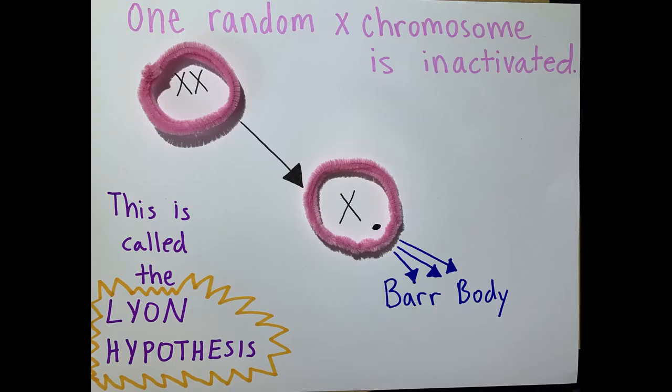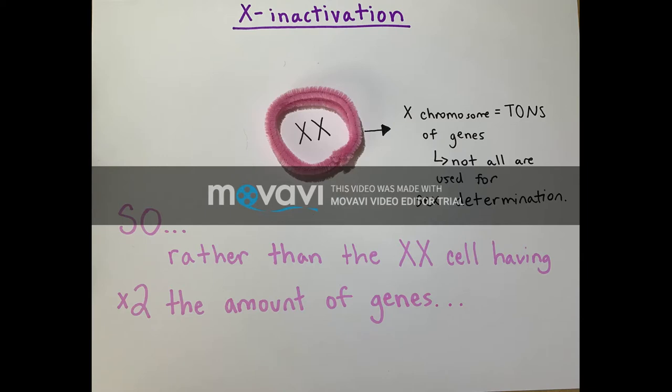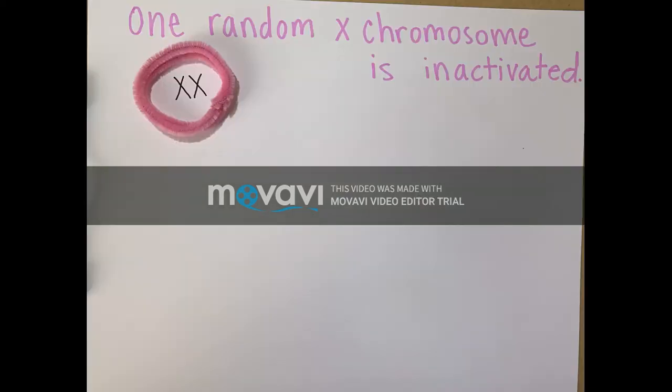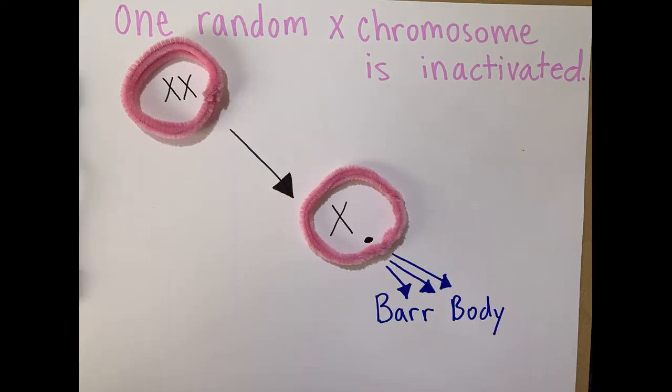This can happen at any time of development and is called the Lion Hypothesis. In the Lion Hypothesis, when the extra X chromosome inactivates, it becomes tightly compacted into something called a bar body, which is pushed into the periphery of the nucleus to prevent the bar body's genes from being expressed into proteins.